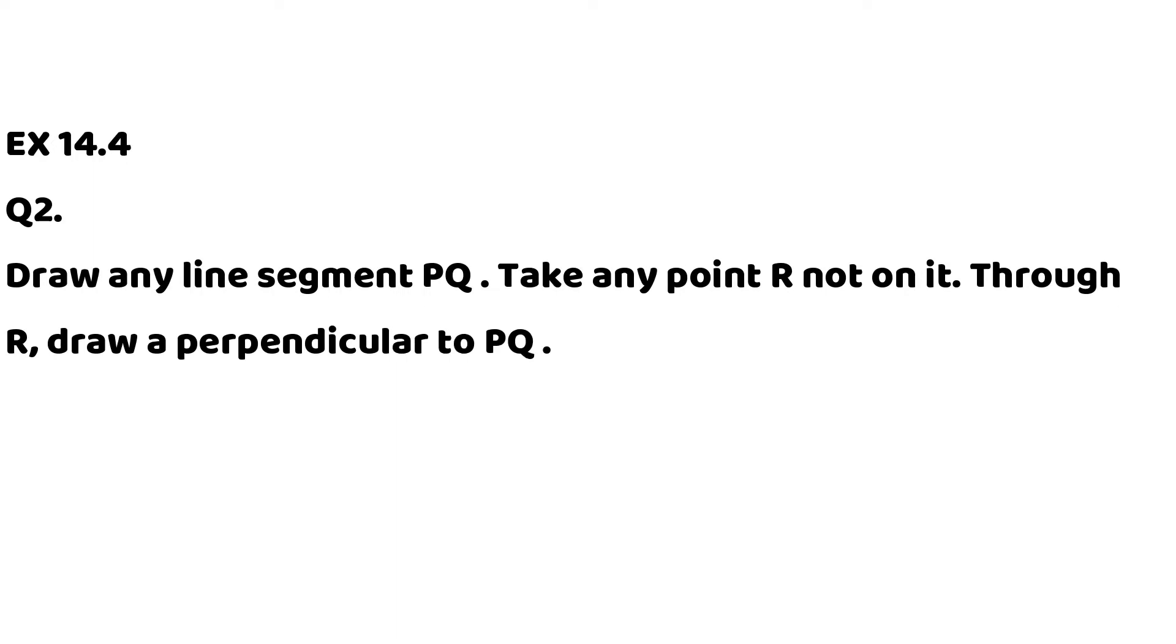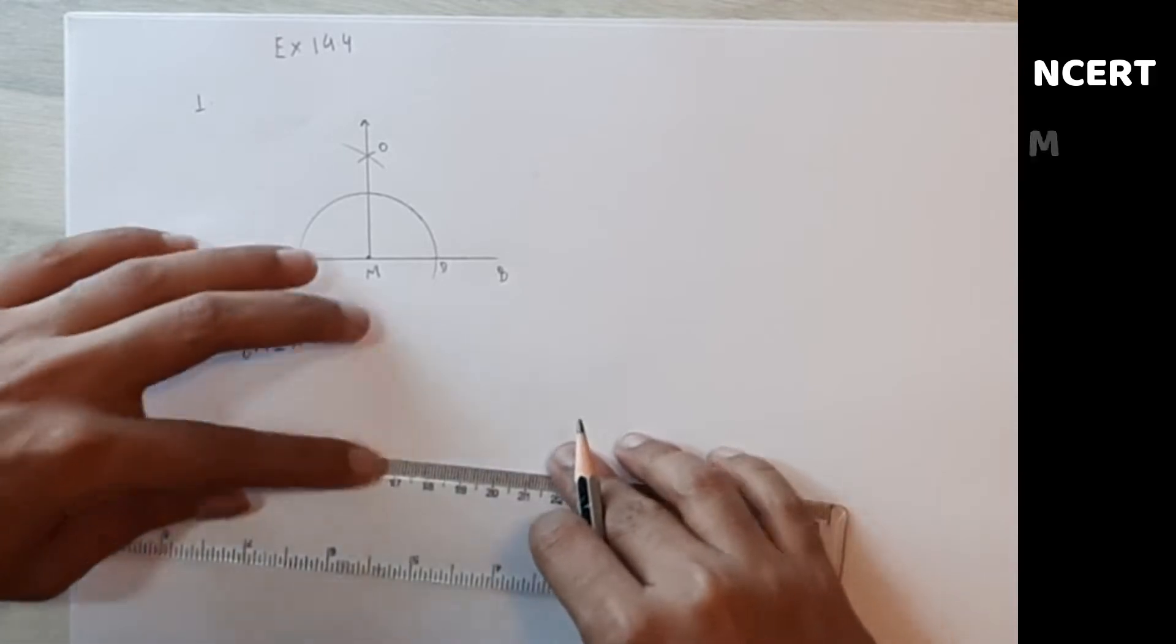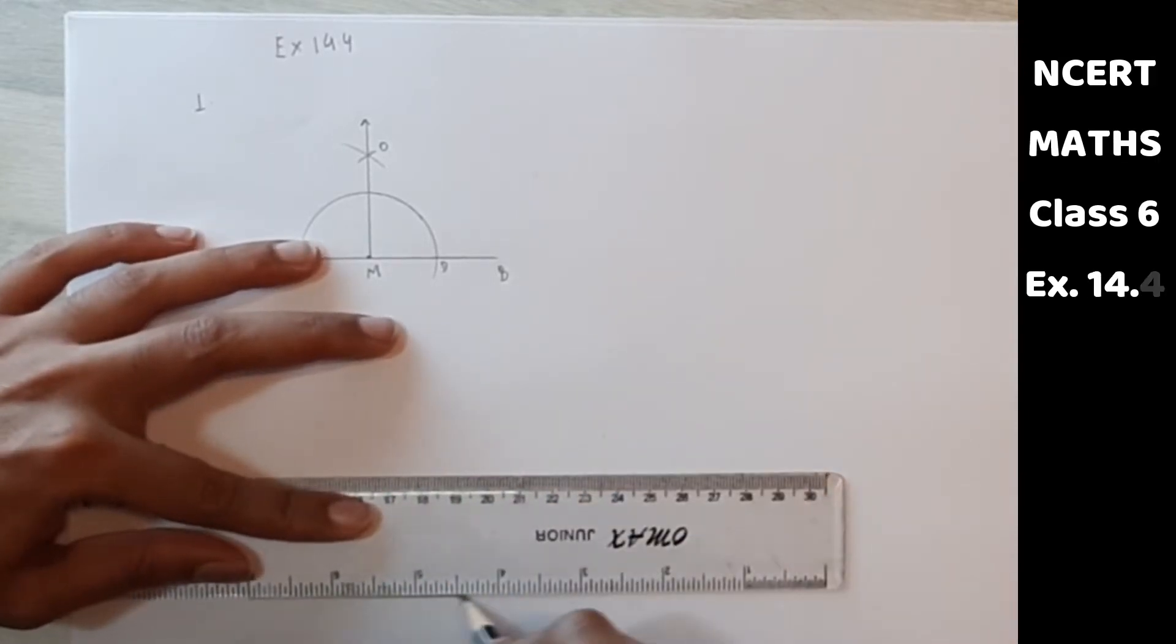Now next question, question number 2. Draw any line segment PQ, take any point R on it, through R draw perpendicular to PQ using ruler and set square. So question number 2, you have to draw a line PQ.